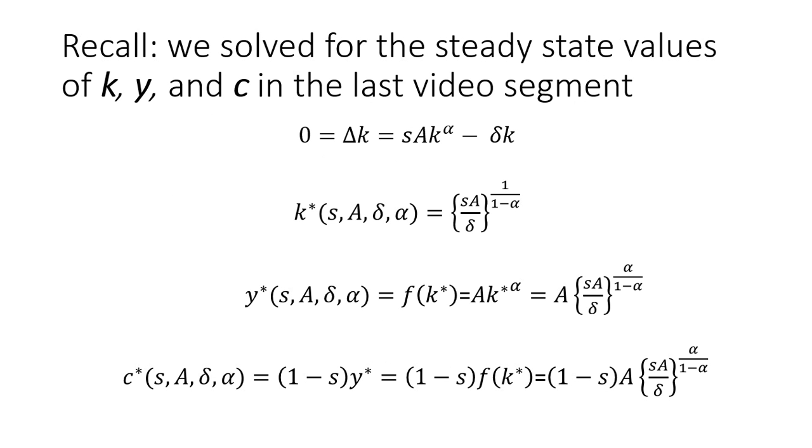Just to recall what we had done last time, we set up the model and imposed the steady state condition, which essentially said in the steady state capital per person should not be changing. Then we solved for the value of capital in the steady state to get k-star as a function of the exogenous parameters of the model.